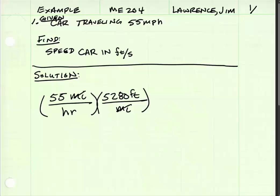Now we need to change our hours into seconds. Well, in one hour there are 60 minutes, and one minute has 60 seconds. Cancel out our minutes here, cancel out the hours here, and we're left with feet per second.